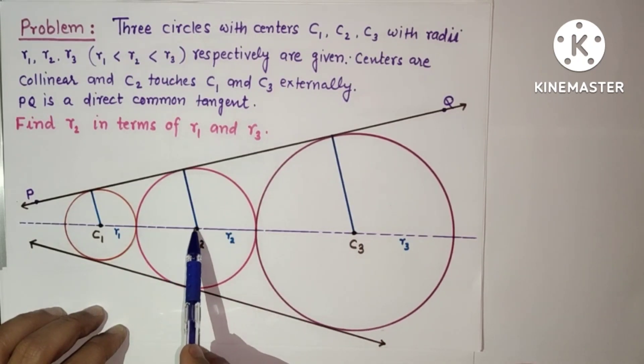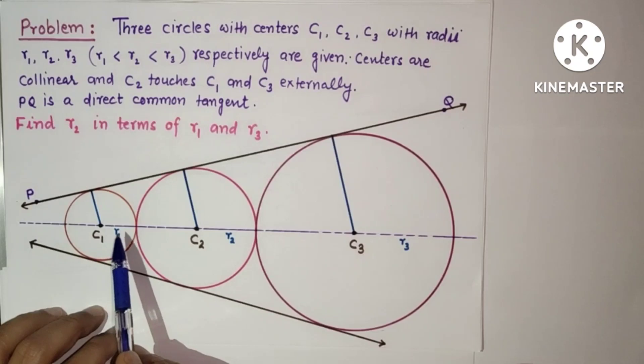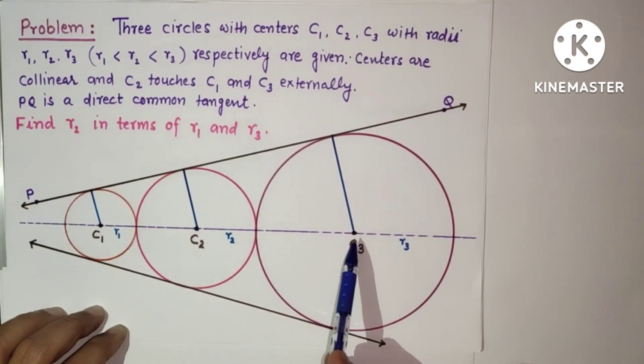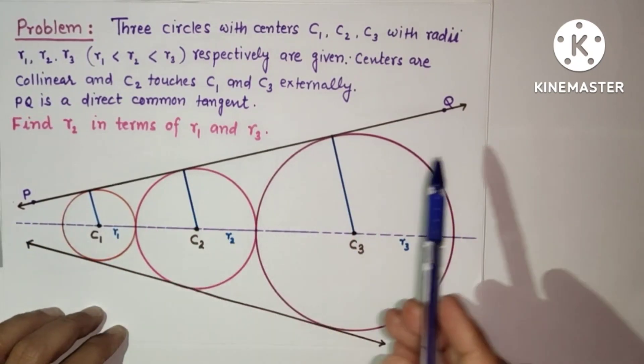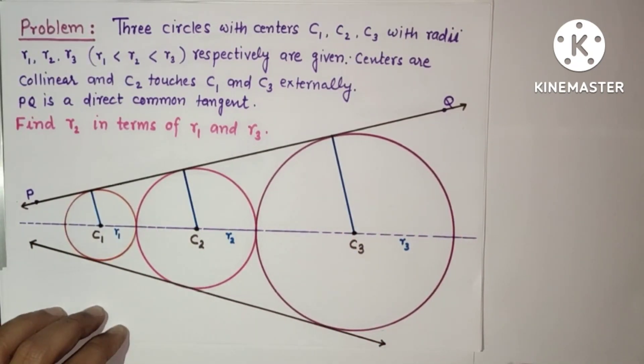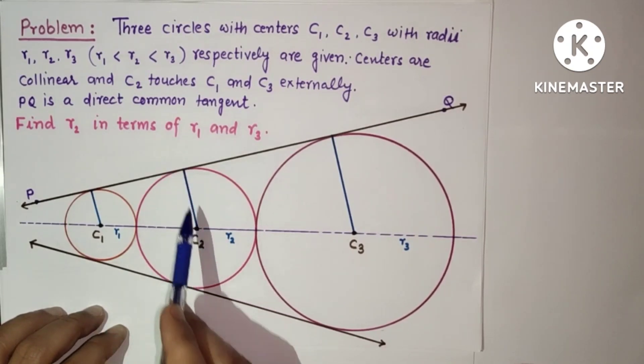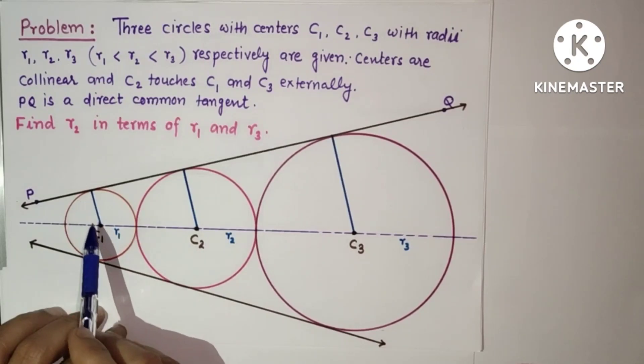C2 touches two other circles externally - C2 touches this circle with center C1 and this circle with center C3. PQ is a direct common tangent. We have to find the value of this radius in terms of this circle radius and this circle radius.